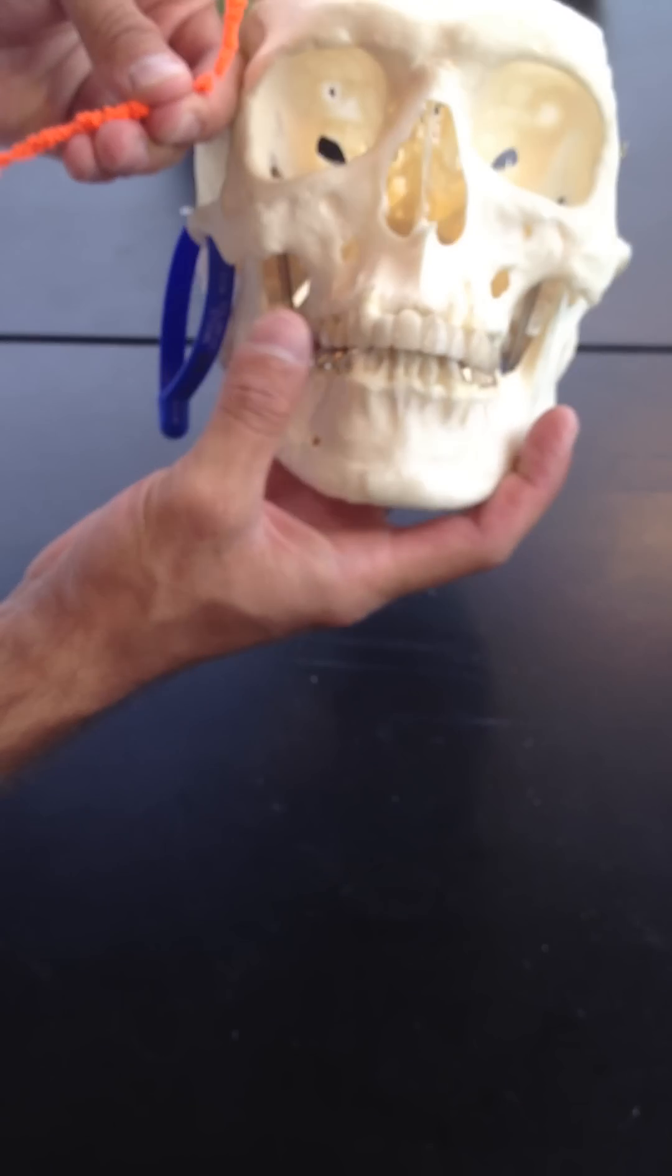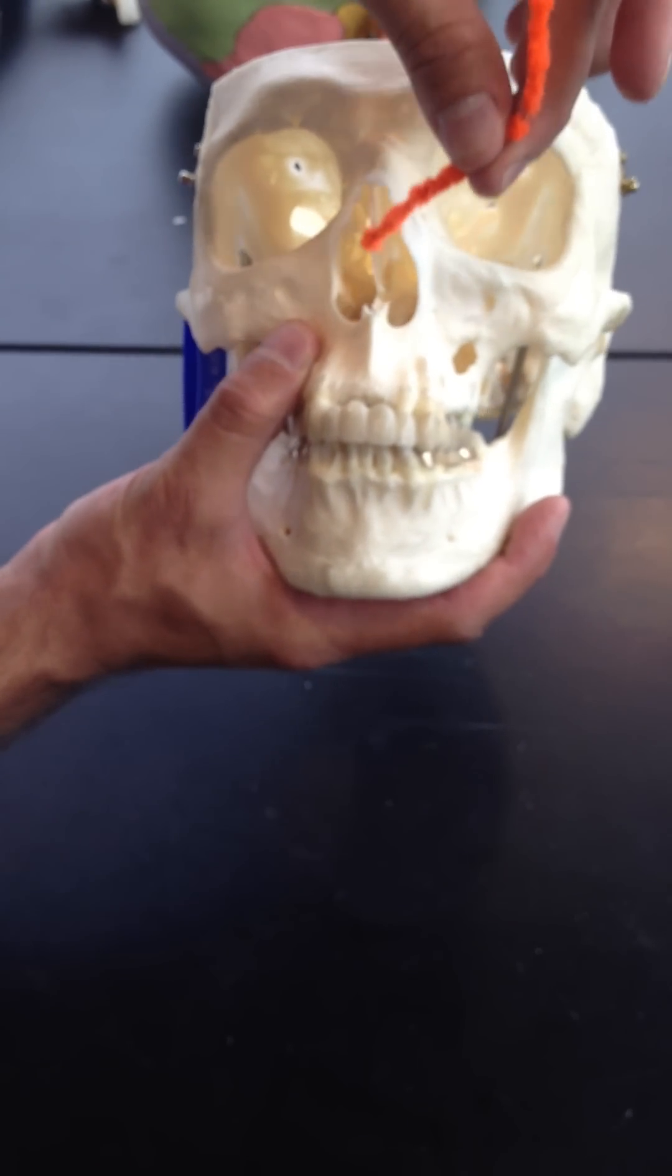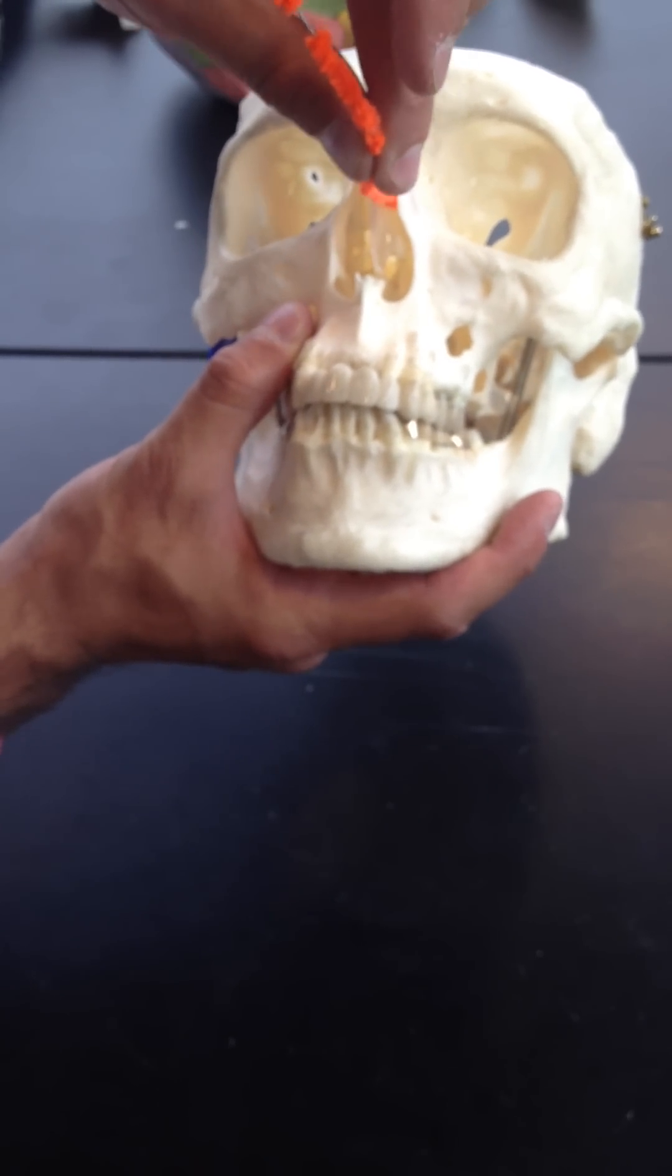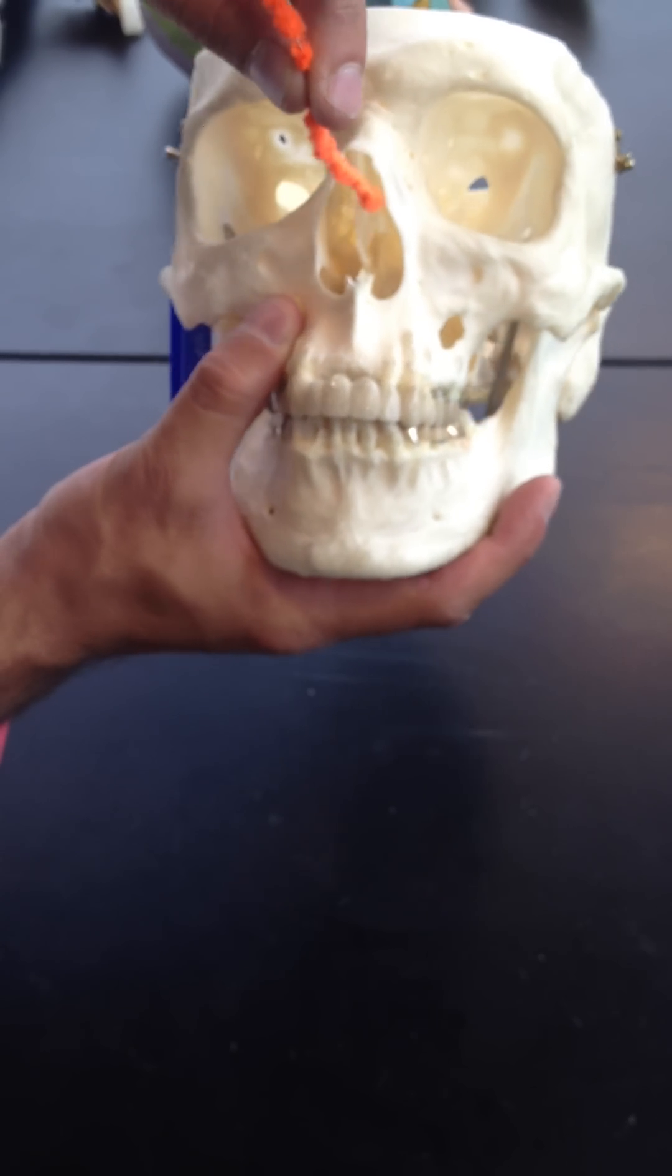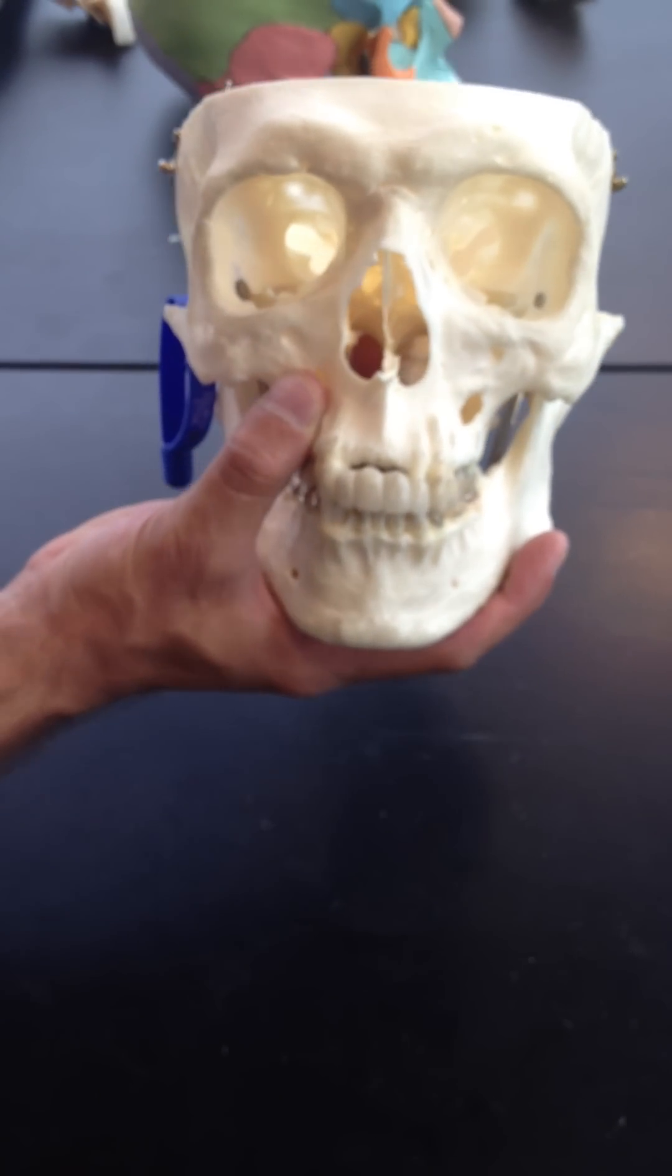And if you look straight into the nasal cavity, you have the perpendicular plate, and you can barely see the superior nasal conchae in there. And the middle nasal conchae should be right in this area. It's not very good on this skull. Let's see if I can find a better one.